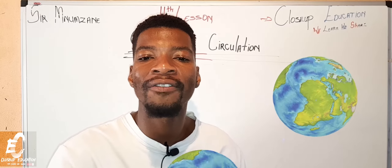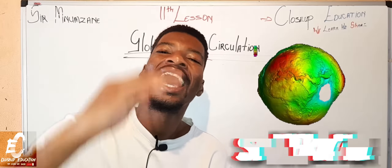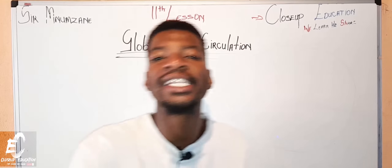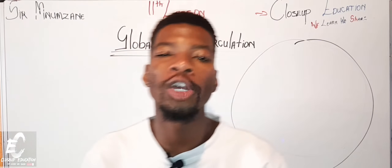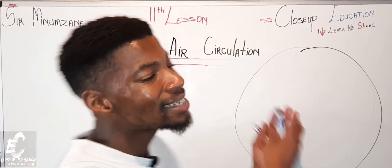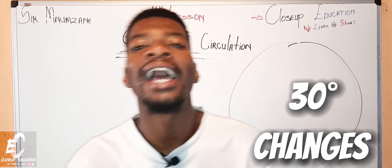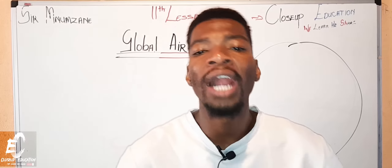Most people know the earth as a round shape, but as geography learners and teachers we know that it is spherical, meaning it has an uneven shape. To fully understand air circulation, we draw our earth. It consists of invisible lines called longitudes and latitudes, but today we concentrate on latitudes, because air circulation changes every 30 degrees of latitude, whether south or north.